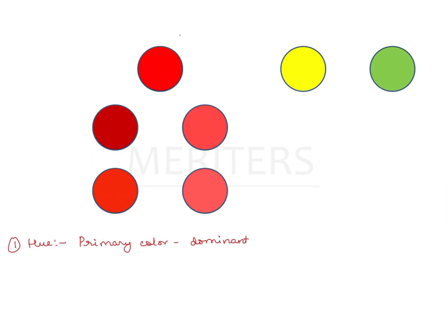For our convenience we will stick to basic colors. So this is red, yellow and green. These are different hues of red. These are different hues, different colors, primary colors.